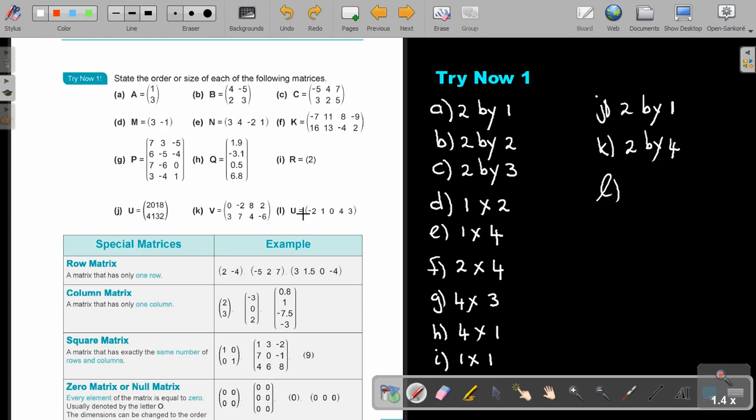And then, this one. How many rows are there? There is one row. And how many columns? One, two, three, four, five. And that's how you name matrices or how you write down the order of matrices.